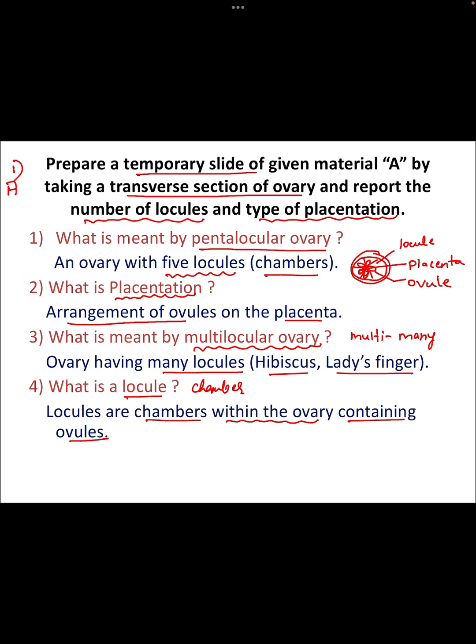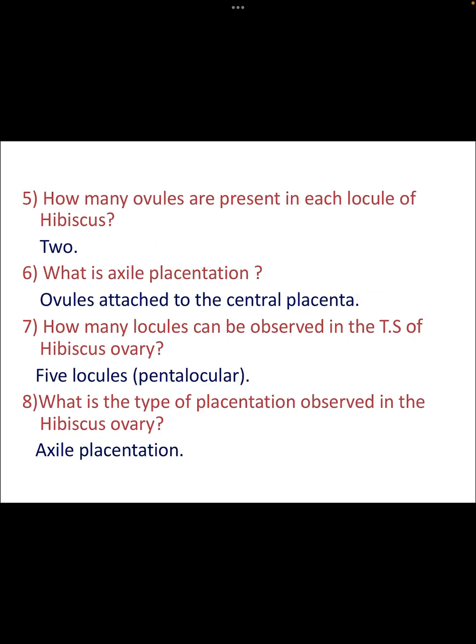How many ovules are present in each locule of hibiscus? That is two. However, in some species of hibiscus there may be one as well. In your TSO, whether you have got one ovule or two ovules, you have to observe properly under the dissection microscope and then answer accordingly. Be careful.